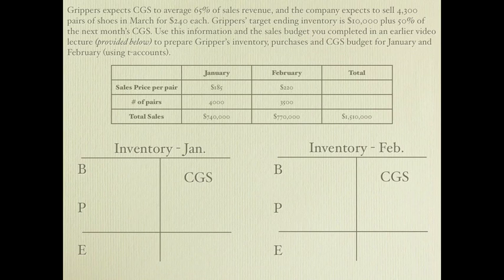I have a January inventory T-account and a February inventory T-account to fill in with information we know. Cost of goods sold is 65 percent of sales revenue. Looking at the sales budget, January sales revenue is $740,000, so cost of goods sold for January is 65 percent of that, which comes out to $481,000.